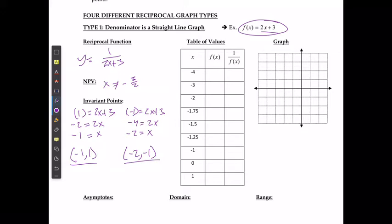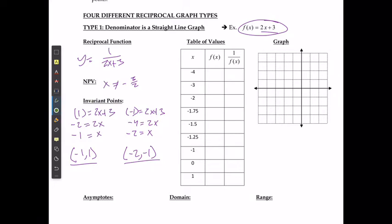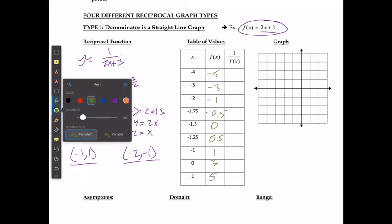I can solve for what the values on my original function are just by substituting in the values for x and state, well this would be negative 5 on my original one, negative 3, negative 1, negative 0.5, 0, positive 0.5, positive 1, positive 3, and positive 5.